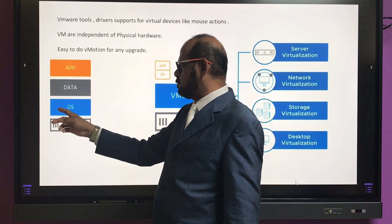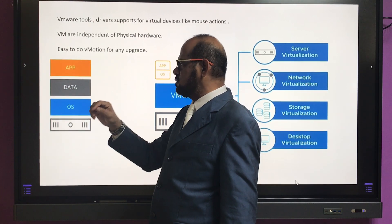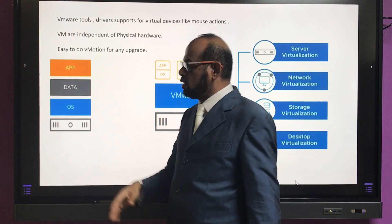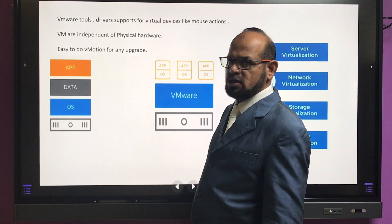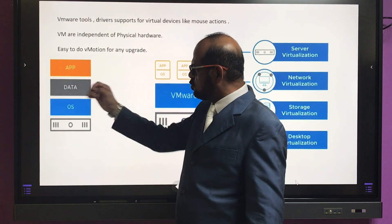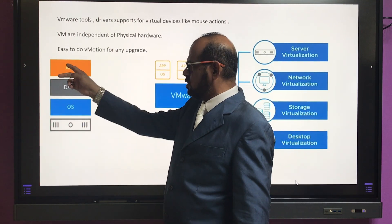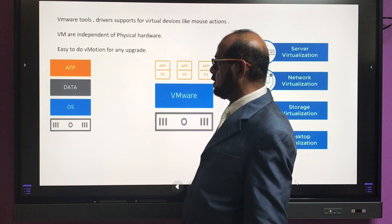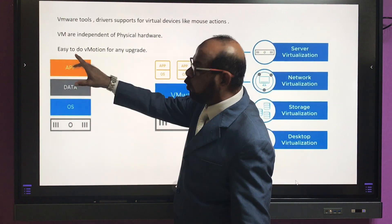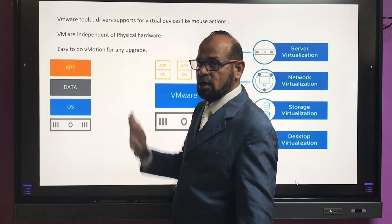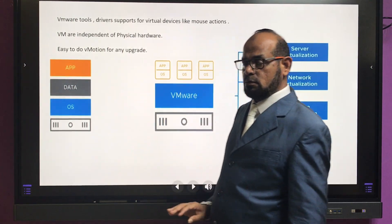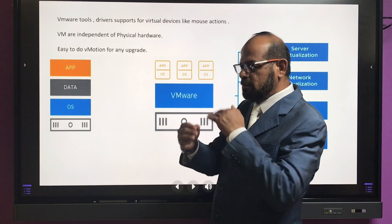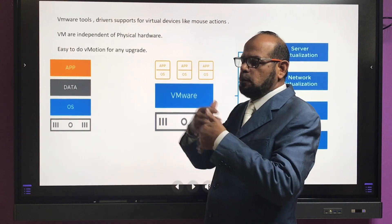This is the architecture of a physical server. A physical server will have one operating system, say Windows 2019. It will have data — either a file share or a SQL Server database — and it will have an application on top. It will have only one OS on one hardware.